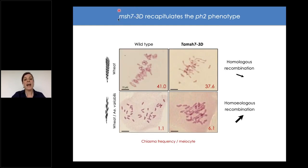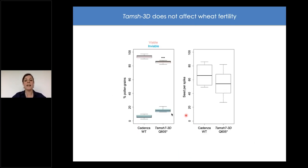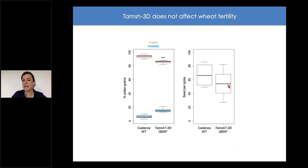To summarize at this point: absence of MSH7-3D fully recapitulates the PH2 phenotypes — a slight reduction in homologous recombination in wheat and a clear increase in homeologous recombination in wheat–Aegilops variabilis hybrids. Analyzing fertility, we found a slight reduction in viable pollen grains and a very slight, non-significant reduction in seeds per spike, meaning this mutation does not drastically affect wheat fertility — which is quite interesting for breeding applications.